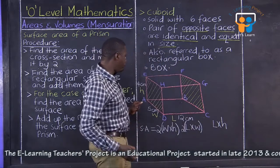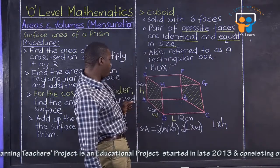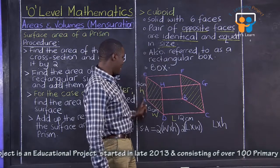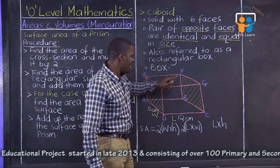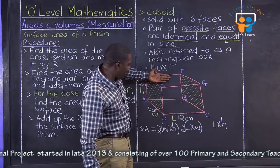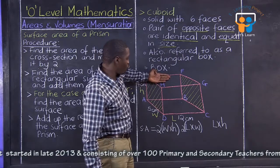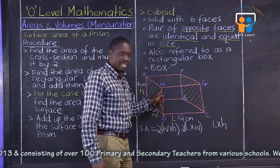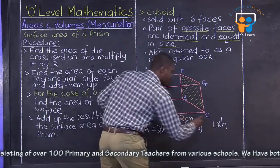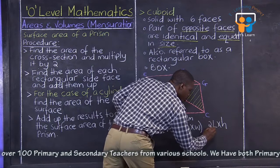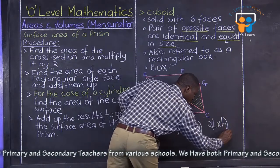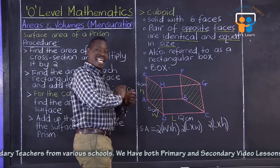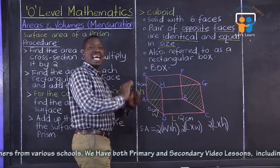But since the top part, which part are we handling? ABFE. Yes. Length times height. Since that part is identical to DCGH, then we also multiply it by 2. Like this. Then after that, what did the examiner say? We go ahead and add. We go ahead and sum up.